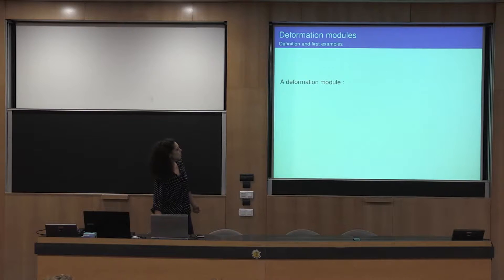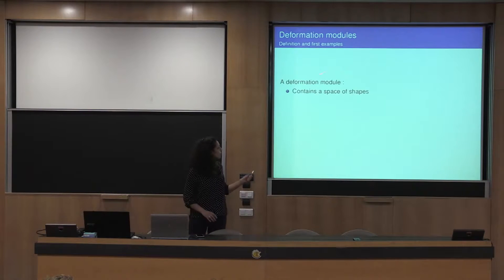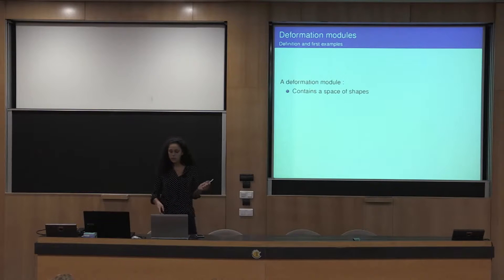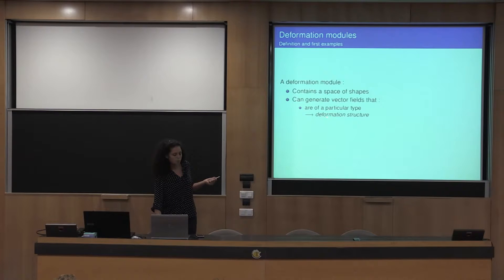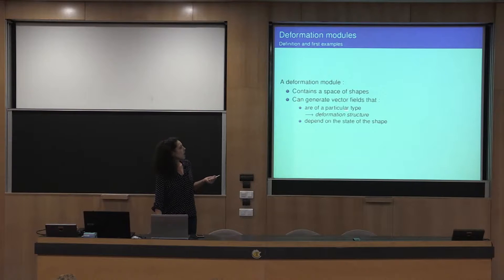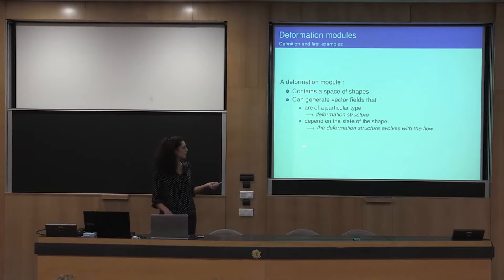Intuitively, a deformation module is a class that contains, among other things, a space of elements we will call shapes. A deformation module can generate a vector field of a particular type, and we choose this type — this is the way to impose a deformation structure. This vector field depends on the state of the shapes of this space, and as these shapes will be transported by the flow, this is the way to force a deformation structure to evolve with the flow.